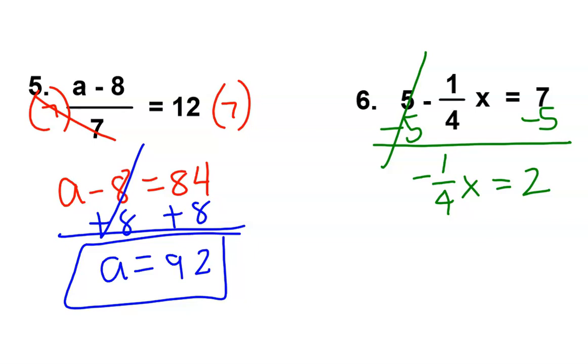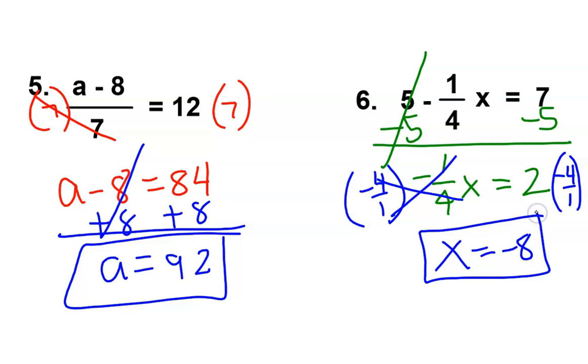Final step. Divide your coefficient, but since it's a fraction, multiply by the reciprocal. And that concludes our lesson on solving two-step equations.